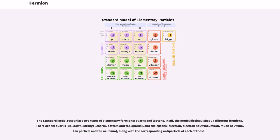In all, the model distinguishes 24 different fermions. There are six quarks: up, down, strange, charm, bottom, and top quarks, and six leptons: electron, electron neutrino, muon, muon neutrino, tau particle, and tau neutrino, along with the corresponding antiparticle of each of these.